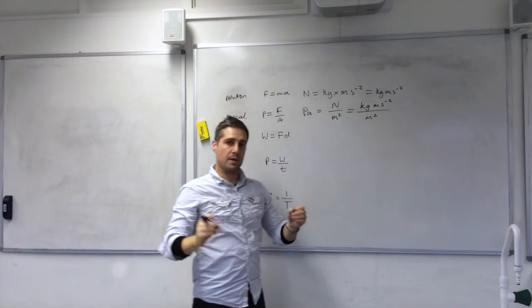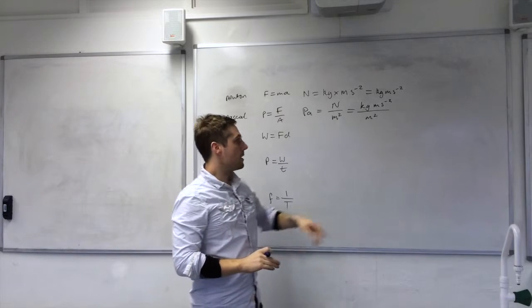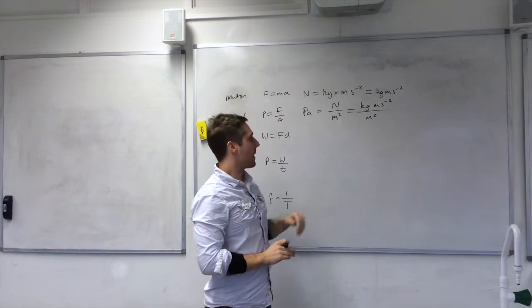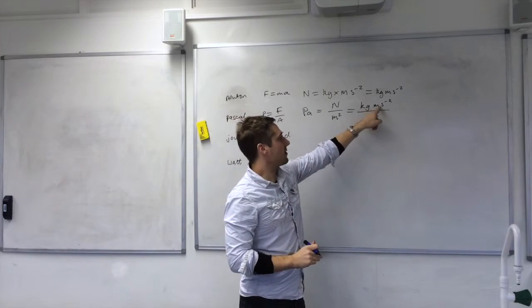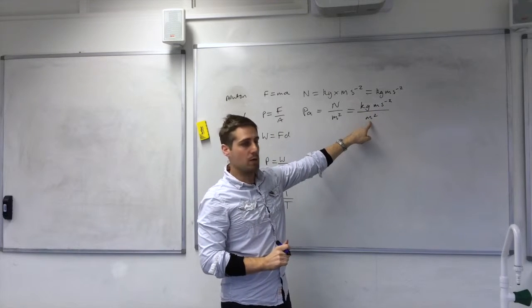So I've got kilogram metres per second squared divided by metres squared. Now I've got metres on the top row, metres squared on the bottom row, so I can simplify that.